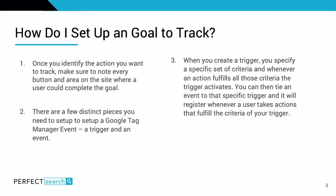There are also a few distinct pieces you'll need to set up in order to correctly set up an event in Google Tag Manager, otherwise known as GTM — those being a trigger and an event. When you create a trigger, you're specifying a specific set of criteria so that whenever an action fulfills those criteria, the trigger activates. For example, if you specify conditions A and B, then whenever A and B occur, the trigger is set. Once that trigger is activated, you can tie it to an event, and it will register whenever a user takes actions that fulfill the criteria of your trigger.